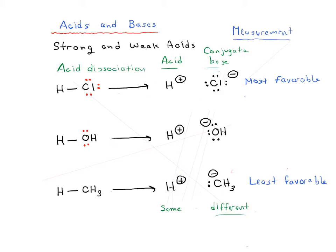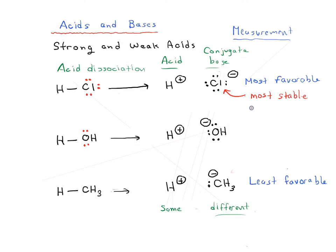We can imagine each of these reactions proceeding slightly most to the right, a little bit to the right, and least to the right. Now, if each of these conjugate bases is different and this is the most favorable reaction, this must also tell us that this conjugate base is the most stable. And this must be the least stable, because it's the least likely to form as a product.